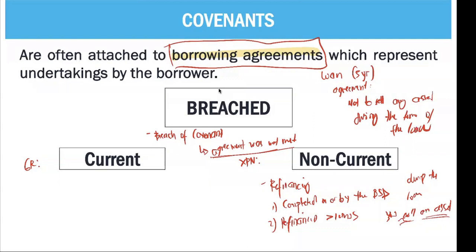So if your liability has a covenant and you did not meet the conditions of the covenant, it is considered a breach of covenant. If there is a breach, the general rule is it should be treated as a current liability. The exception is it can be considered non-current if there is a valid refinancing completed on or before the balance sheet date and refinanced for more than 12 months.